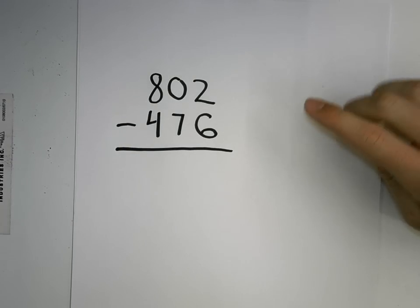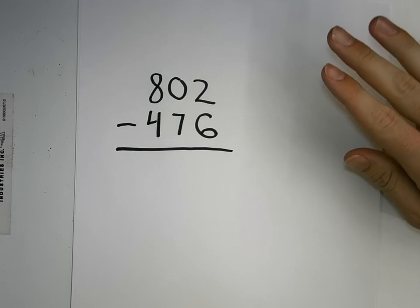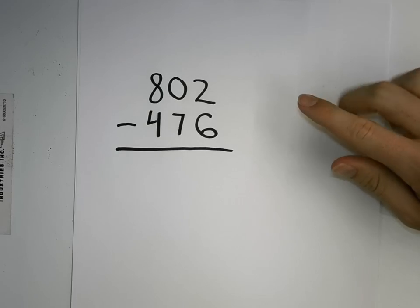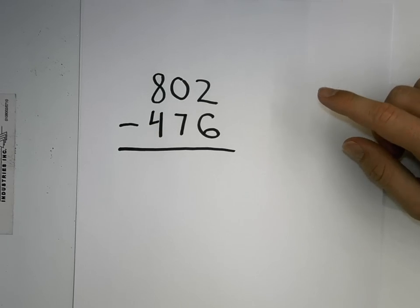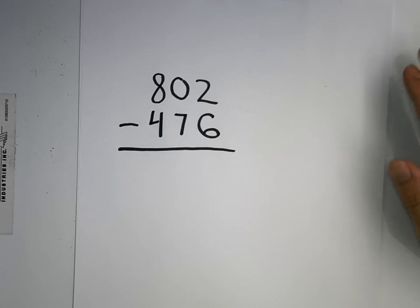I know you guys learned in first grade, second grade, or third grade regrouping, but this is a tricky kind of regrouping because we have a zero here. The language for that is regrouping across zeros.